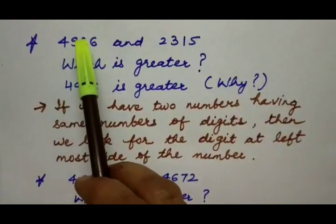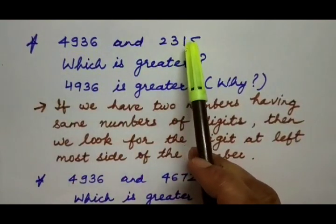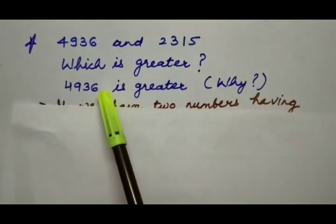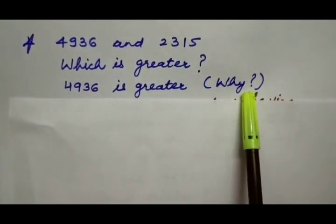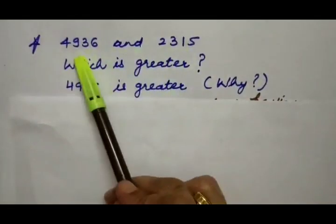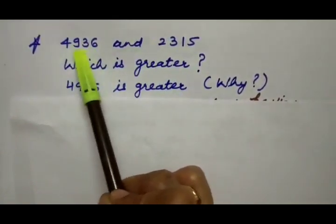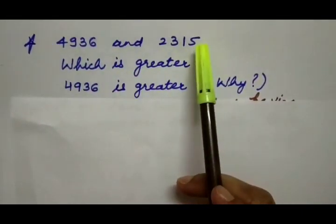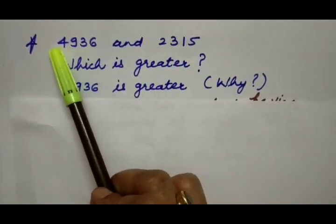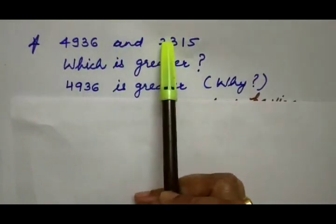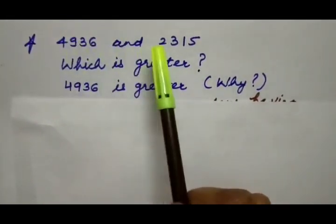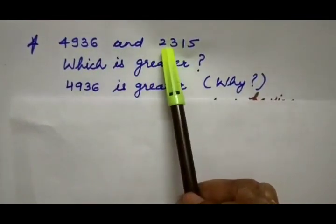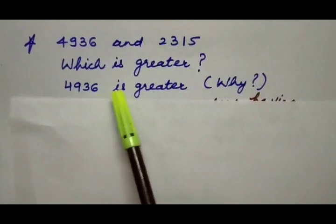Next example: 4936 and 2315. Which is greater? The answer is 4936 is greater. These two numbers have the same number of digits — both have 4 digits. At the thousands place, here we have 4 and here we have 2. Obviously 4 is greater than 2, so 4936 is greater.